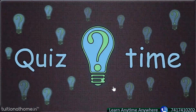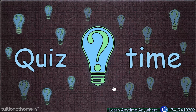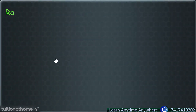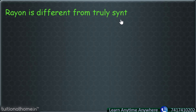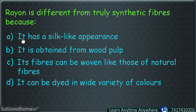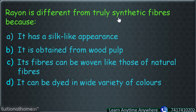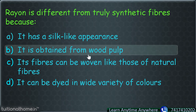Now it is time for a quiz! The first question: rayon is different from truly synthetic fibers because — options are: it has silk-like appearance; it is obtained from wood pulp; its fibers can be woven like natural fibers; or it can be dyed in a variety of colors. The correct answer is: it is obtained from wood pulp. Wood pulp is a natural source, and hence rayon is different from synthetic fibers. Good job!